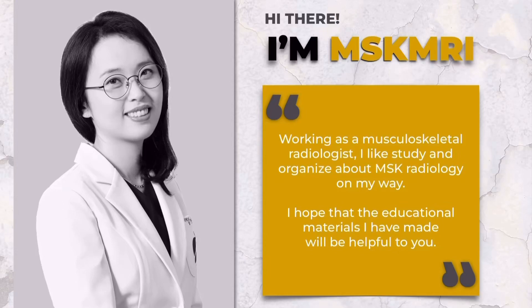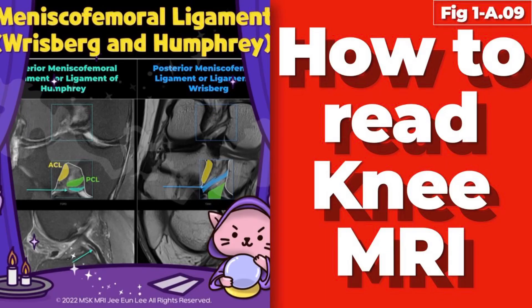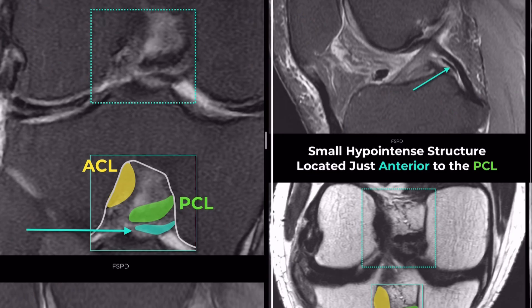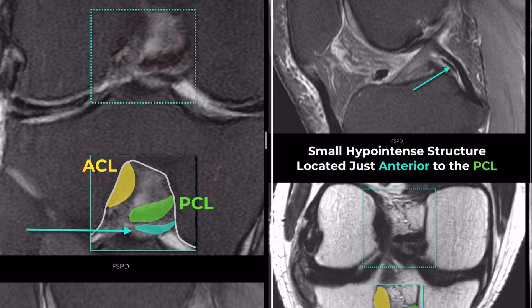Hello, I'm Zhiyunee from MSK MRI. Let's solve two quiz questions. For the first case, the yellow structure represents the ACL, and the green structure represents the PCL.